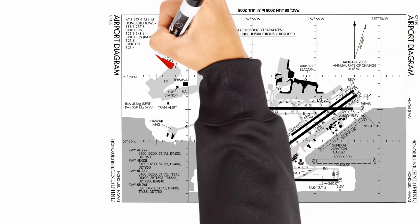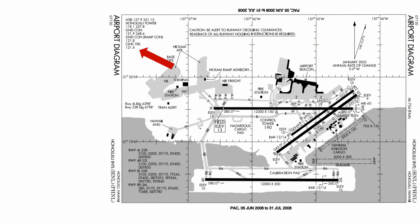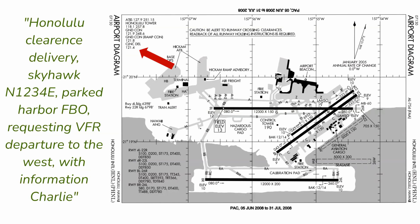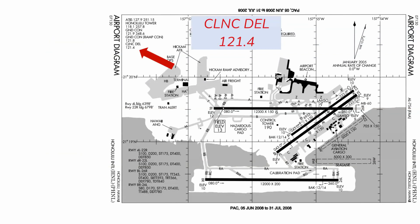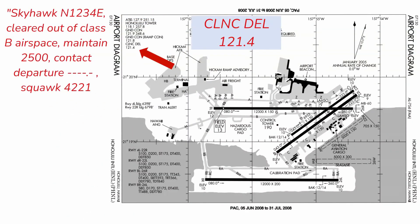For departure from Class B airspace, remember you always need permission to operate in Class B airspace. Before you call Ground, you'll need to contact Clearance Delivery — or if there's no clearance delivery, contact Ground directly — and get permission to depart. That conversation goes something like: 'Honolulu Clearance Delivery, Skyhawk November 1234 Echo, parked Harbor FBO, requesting VFR departure to the west with information Charlie.' Remember the acronym CRAFT? When you get your clearance from clearance delivery, it comes in that order: Clearance, Route, Altitude, Frequency, and Transponder. For a VFR departure, you won't get a void time.